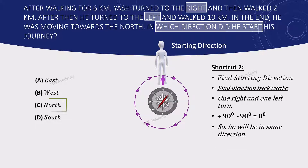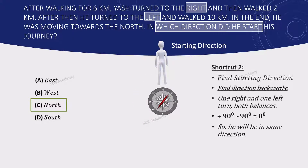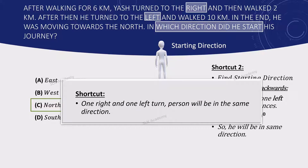Tip: After making one right turn and one left turn of equal angles, the person will be in the same direction — no calculation needed.